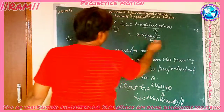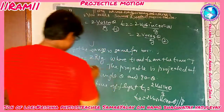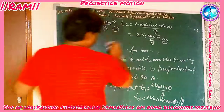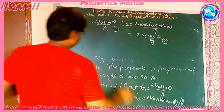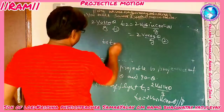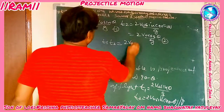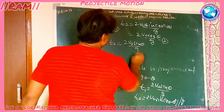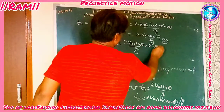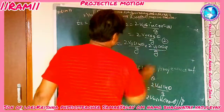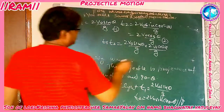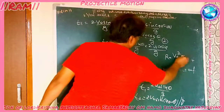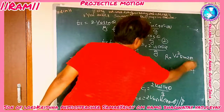Now we compute T1 into T2, which equals (2V0 sin theta upon G) into (2V0 cos theta upon G). We also know that the range of the projectile R is equal to V0 squared times sin(2 theta) upon G.